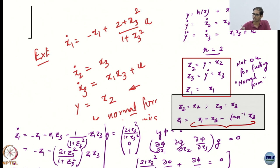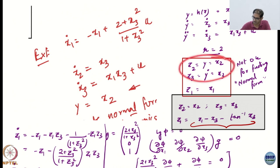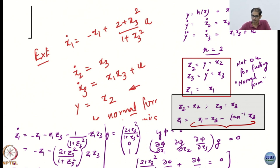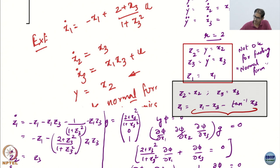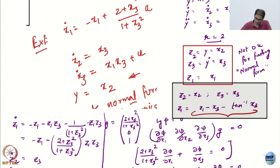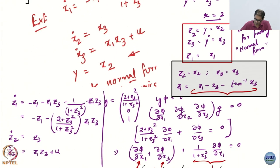I took two derivatives of the output and reached the control. So my first two states become y and its derivative. Then I need to find the phi state which will make it a diffeomorphism. If I choose x1, this is a problem because the derivative of x1 contains the control — I do not like it because it is not going to give me the normal form. What do I need for the normal form? I need L_g phi equal to 0, so that there is no control term appearing. So what is L_g phi? It is basically the partial of phi multiplied by g. What is g? It is basically whatever is multiplying the control: (2 + x3^2), (1 + x3^2), 0, and 1.